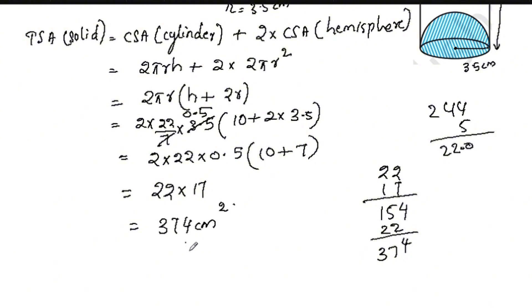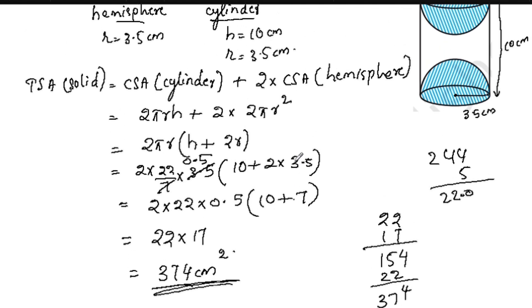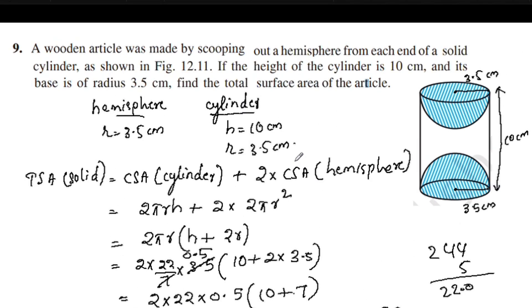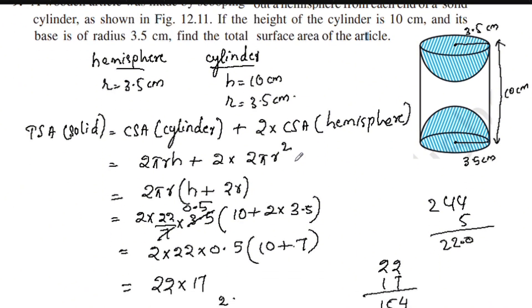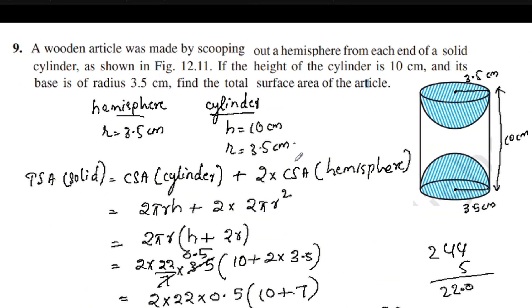374 cm square. This is our total surface area. Very simple. Now we have finished this exercise 12. We will give you the next video.